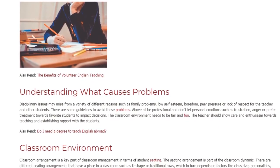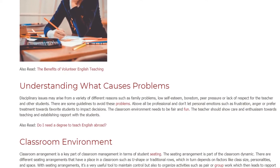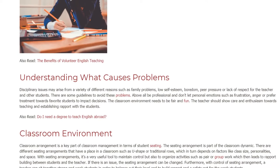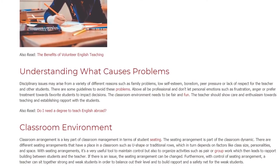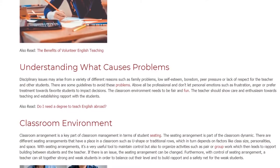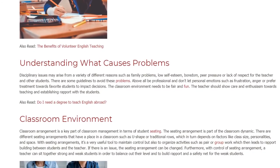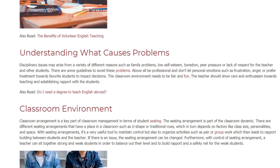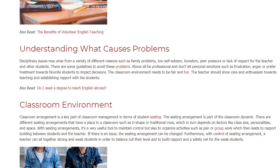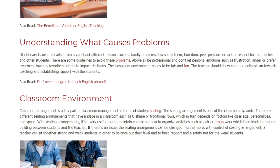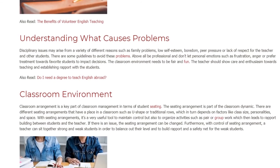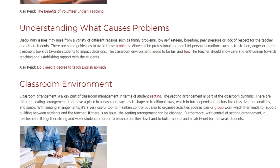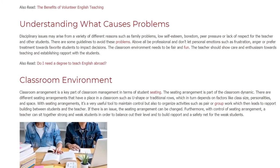The classroom environment needs to be fair and fun. The teacher should show care and enthusiasm towards teaching and establishing rapport with the students. Classroom arrangement is a key part of classroom management in terms of student seating. There are different seating arrangements that have a place in a classroom, such as a U-shape or traditional rows, which depends on factors like class size, personalities, and space.